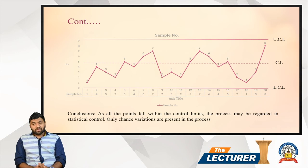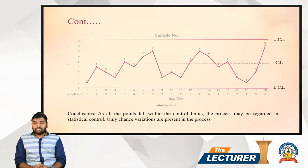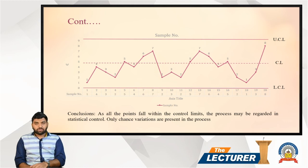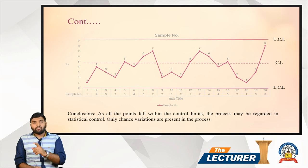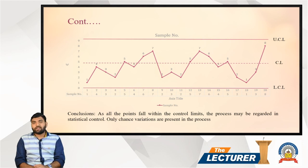As all the points fall within the control limits, the process may be regarded as in statistical control. Only chance variation is present in the process. Not a single sample falls above UCL or below LCL, so we conclude this is a statistically controlled process.